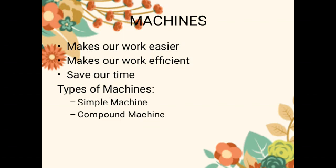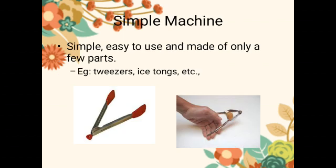What are the types of machines available? They are simple and compound machines. So what is a simple machine? We are able to do work simply and the mode of operation is very simple. It is made up of only a few parts. Examples are tweezers, ice tongs, and squeezers. For example, we can squeeze a lemon with the help of a squeezer — that is also a simple machine. It makes our work easier and is very simple to handle.